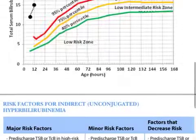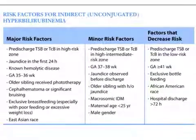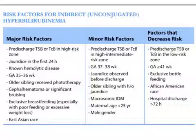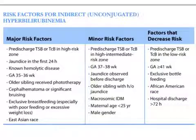The major risk factors for indirect or unconjugated hyperbilirubinemia are: a pre-discharge TSB (total serum bilirubin) or TCB in the high risk zone — that is more than the 95th percentile. Jaundice in the first 24 hours — remember, any jaundice appearing within the first 24 hours is always pathological. Known hemolytic disease. Gestational age of 35 to 36 weeks.